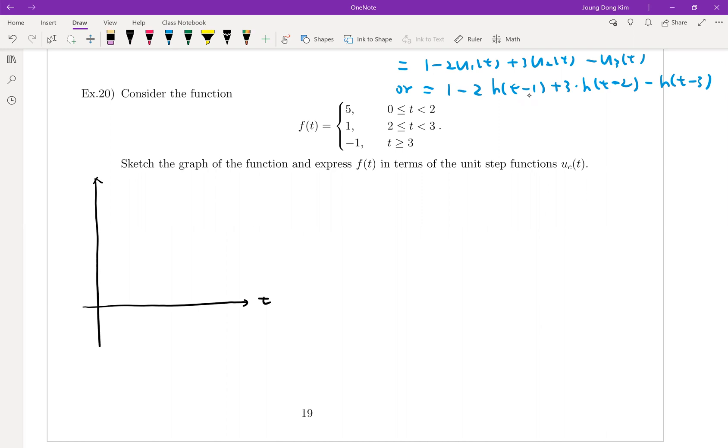Again, we don't care about the negative part because it's not an issue with the Laplace transform. 0 to 2 is 5, and then 2 to 3 is 1, and then 3 to infinity is negative 1. That's it.